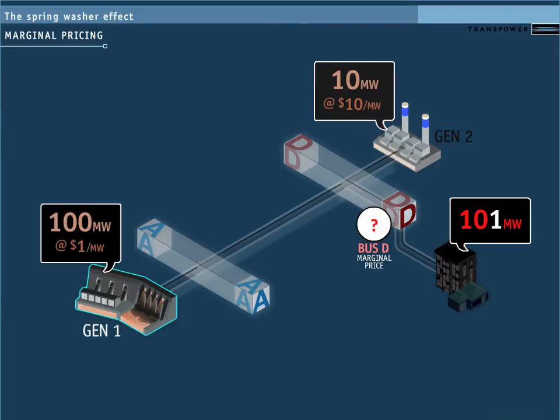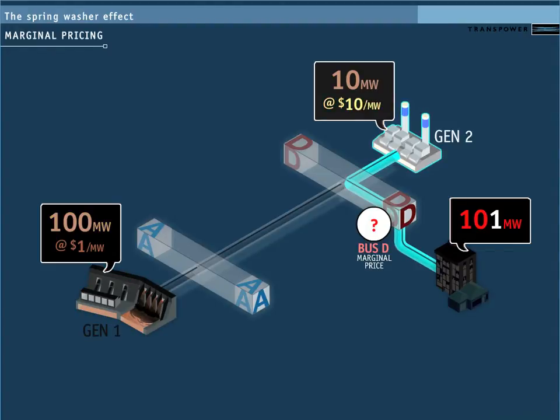In this case, because Generator 1 has only offered up to 100 megawatts, the next megawatt would have to come from another source. Here, this source is Generator 2, at $10 per megawatt.